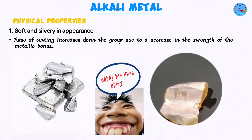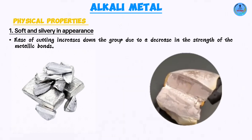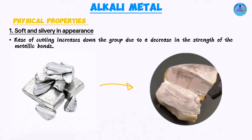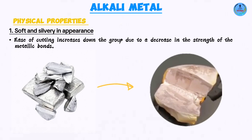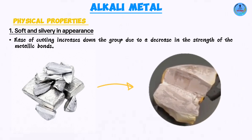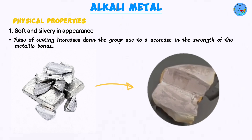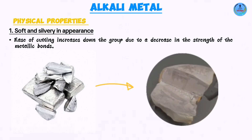If you cut it and let it be exposed to air, after some time you come back and the appearance has become dull. The reason is because it undergoes oxidation — these are metals that are very reactive, so they react with air, specifically with oxygen, to form oxides which are less shiny than the actual metals. That is why they tarnish after a short time.